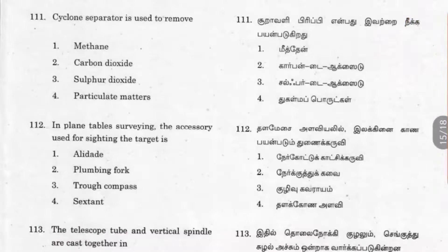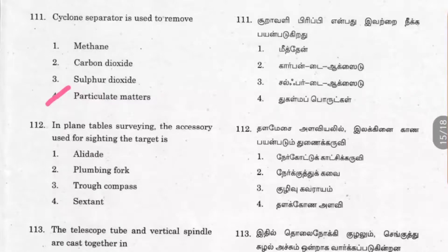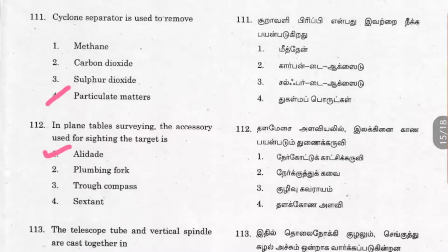Question 111: A cyclone separator is used to remove particulate matter. It removes higher size particles only and will not remove gaseous pollutants like carbon dioxide or sulfur dioxide. Question 112: In plane table surveying, the accessory used for sighting the target is the alidade. The plumbing fork is used for centering the paper point to the ground. The trough compass and sextant are for finding angles.